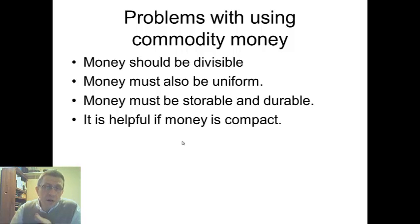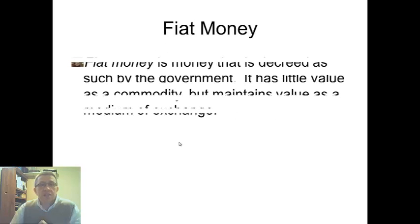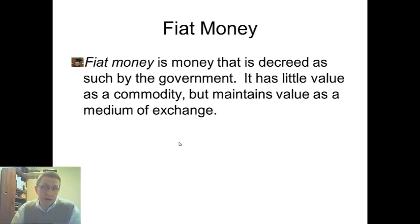There are issues with commodity money, as we see. Fiat money is what we classify for money that has no outside non-monetary use. The government says it's money, and because of that, it's money. Sometimes, it doesn't even have to be the government that says it's money. Bitcoin, no government decrees that it has value, but it maintains value as a medium of exchange. For the most part, money is decreed as such by some government entity. That's fiat money.